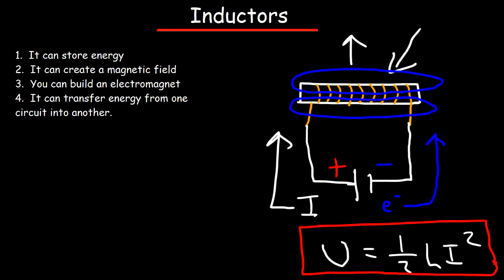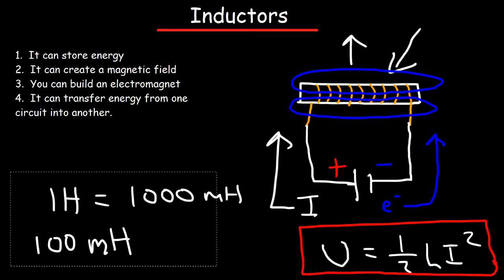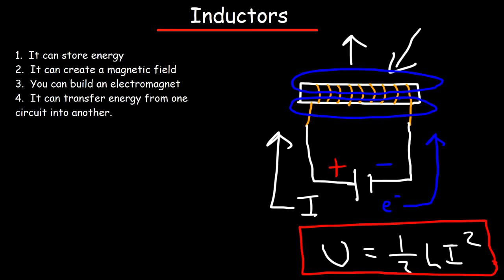So if you go to, let's say, Radio Shack or eBay, and you see an inductor with 100 mH, this is millihenries. 1 henry is equal to 1,000 millihenries, so 100 millihenries is 0.1 henries. That's the unit for inductance.